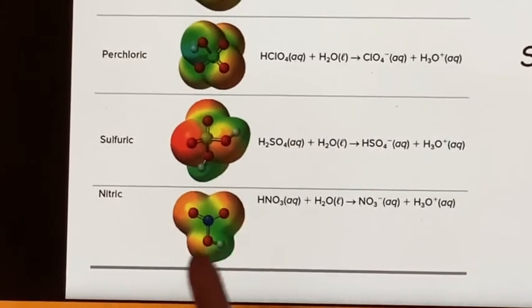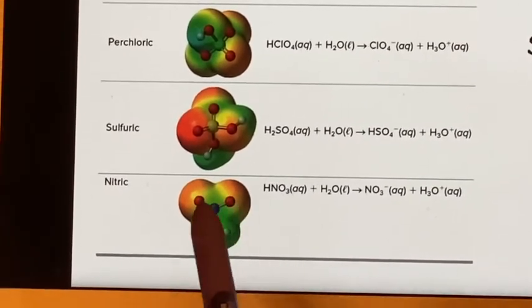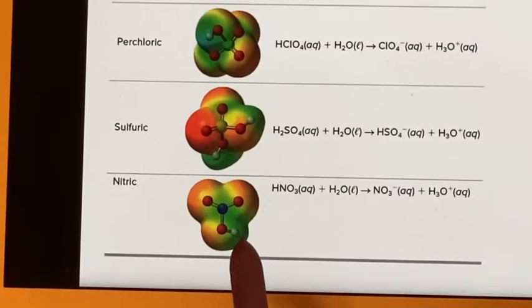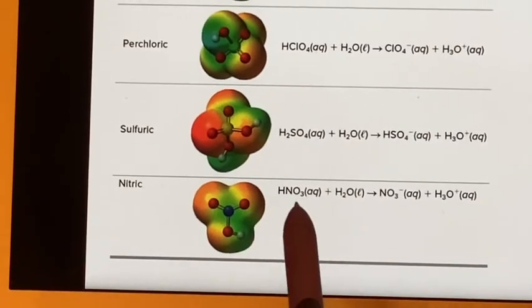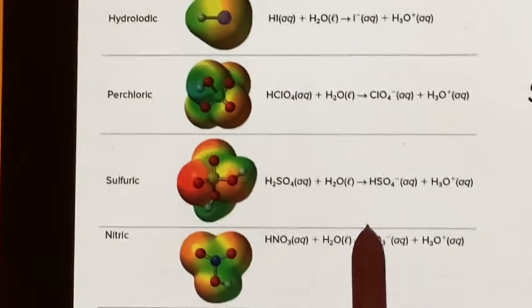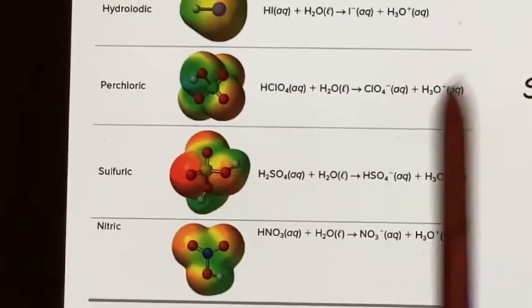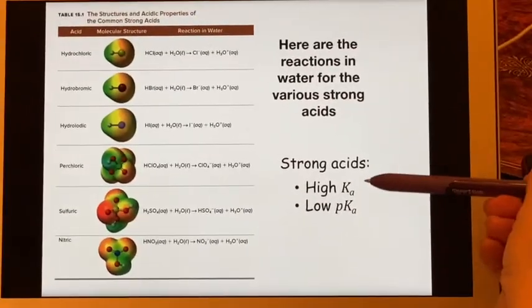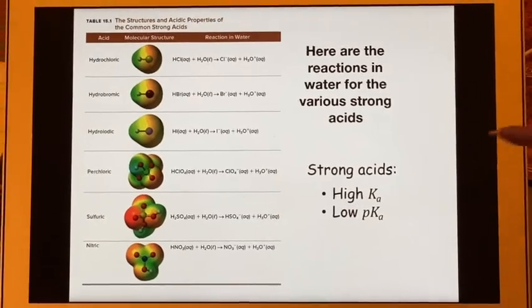And here is nitric acid. Nitrogen in the center, oxygen is attached to it, and then again, hydrogen is attached to an oxygen. So when that hydrogen comes off, it leaves a nitrate ion. So once again, strong acids will have a high Ka and a low pKa.